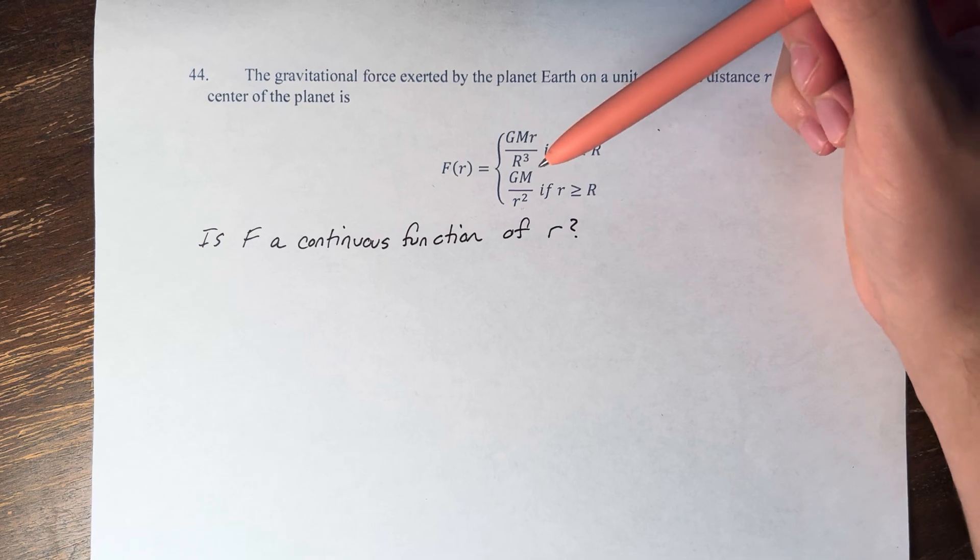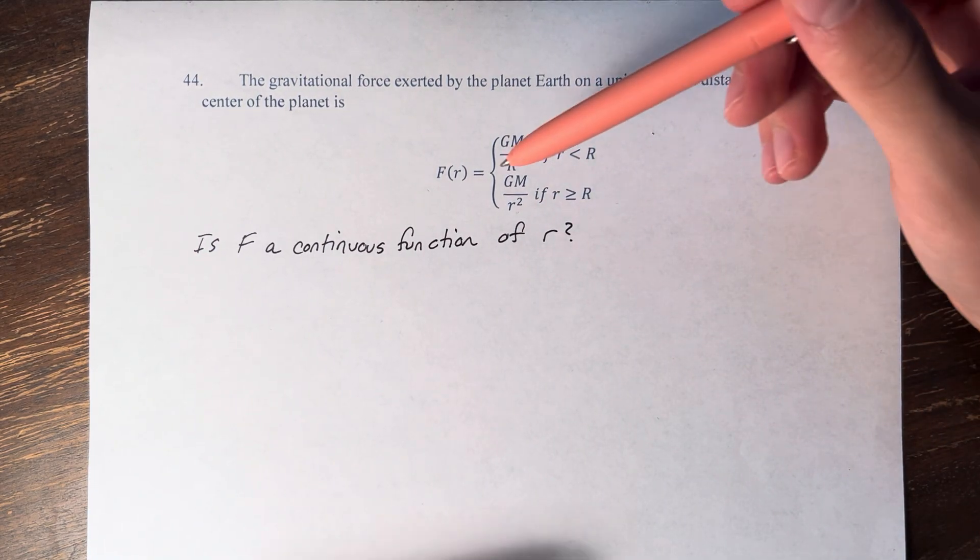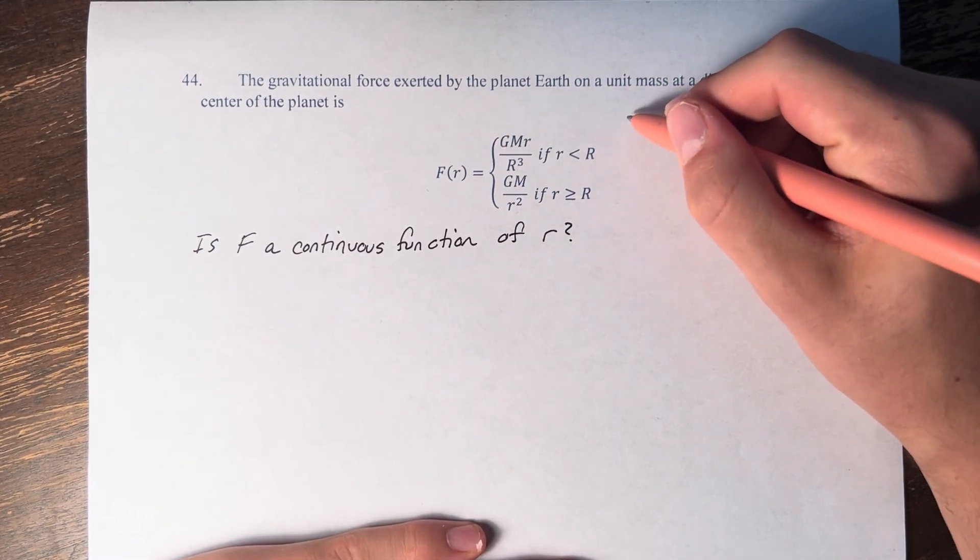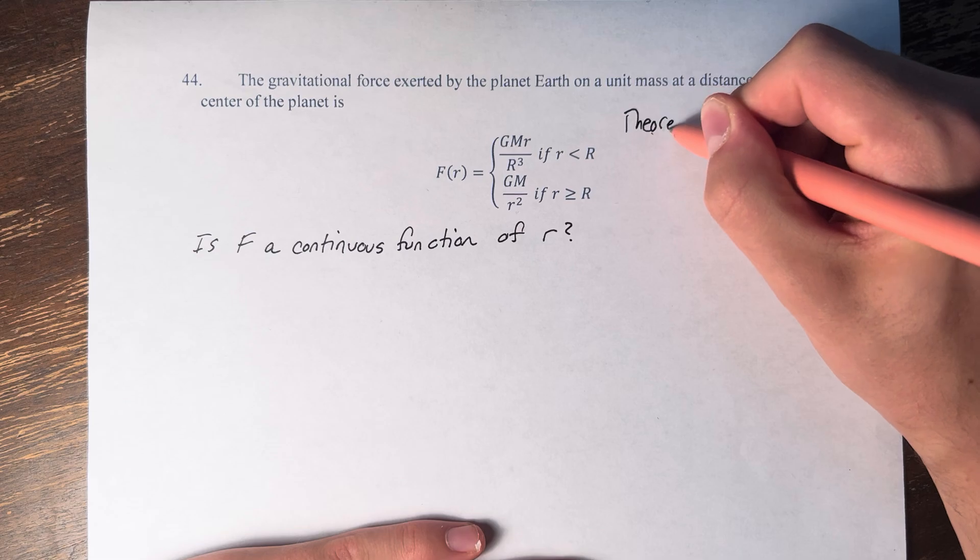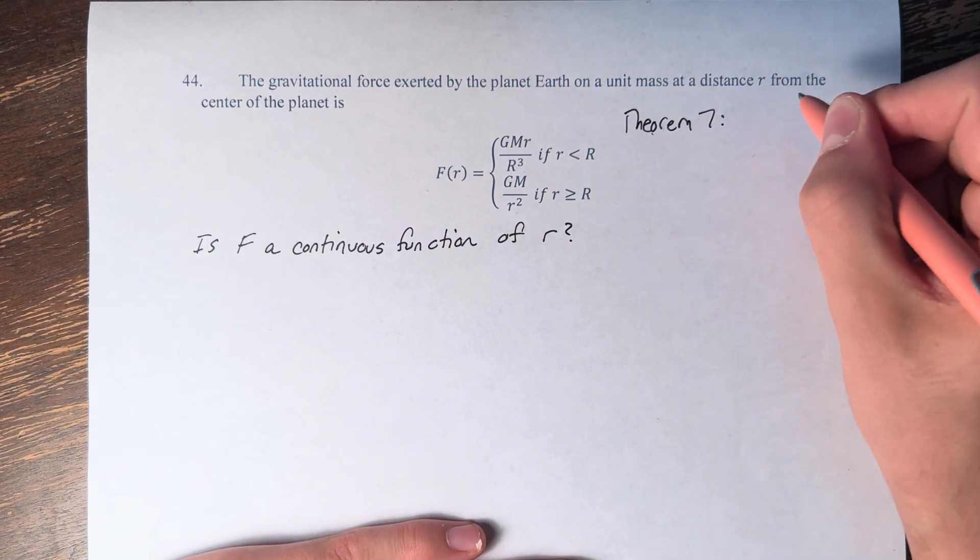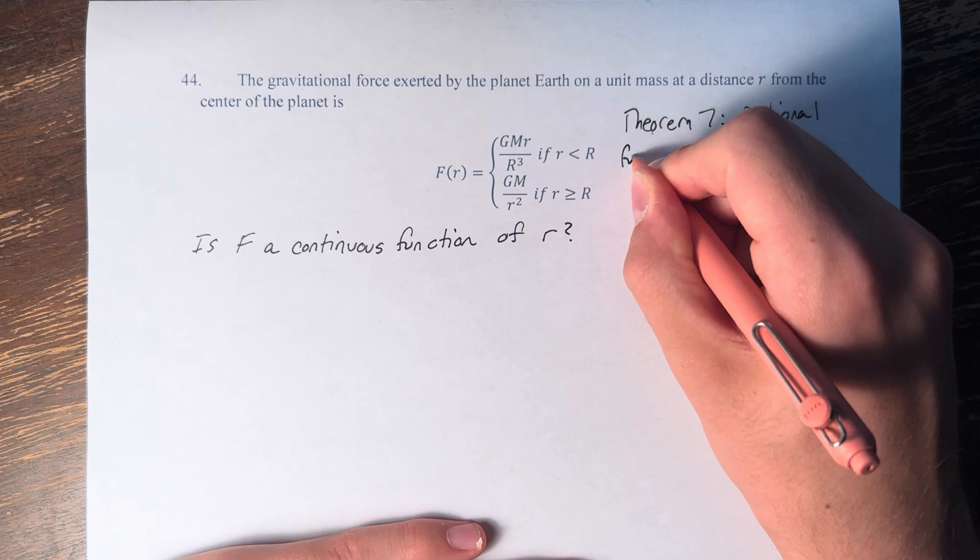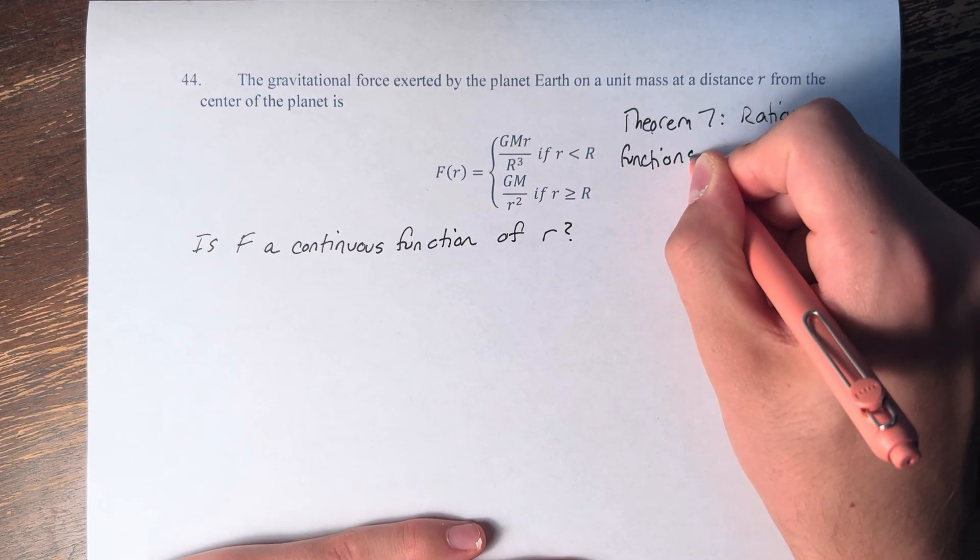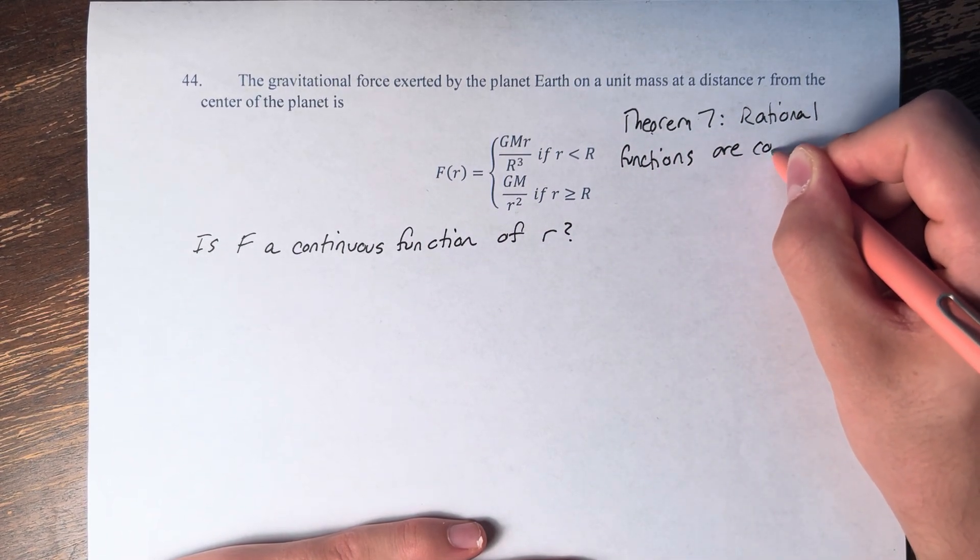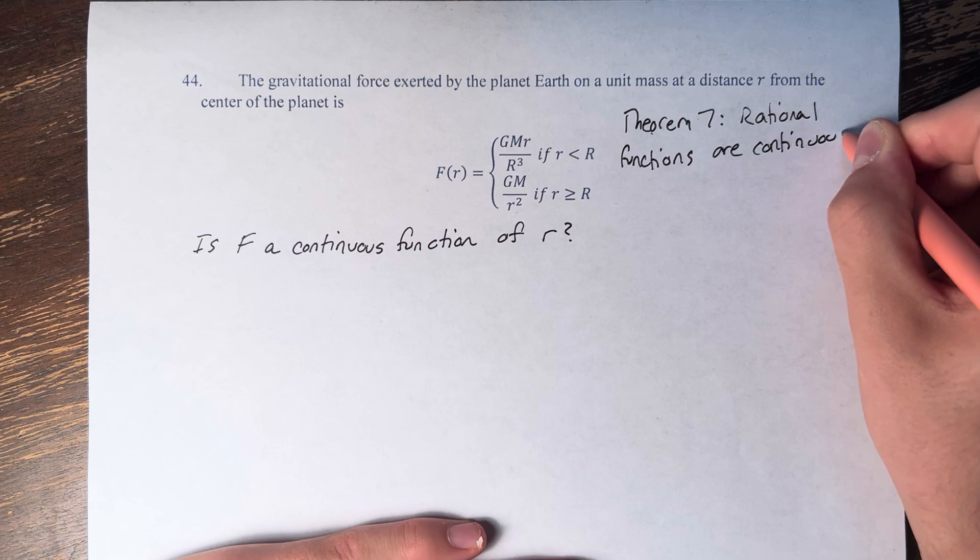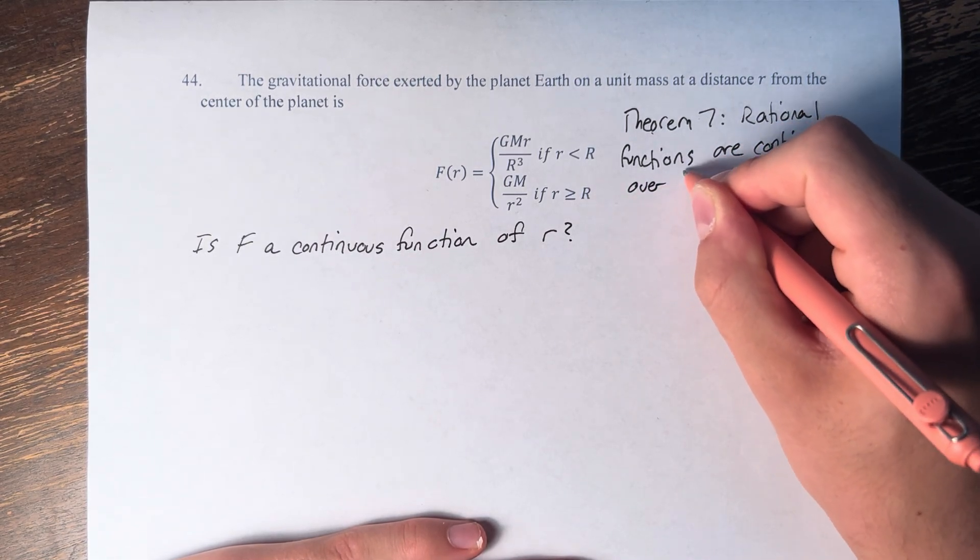And so what we have here is two rational functions, and we know from Theorem 7 that rational functions are continuous over their domains, except at the endpoints.